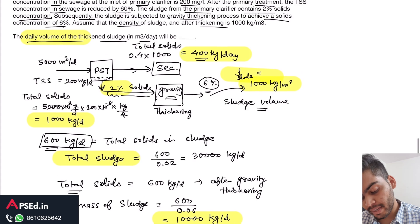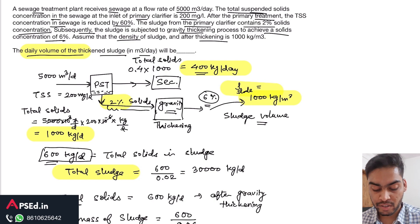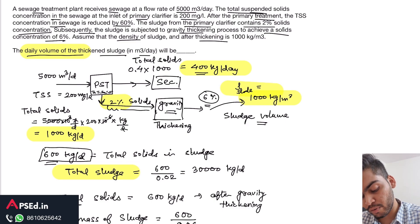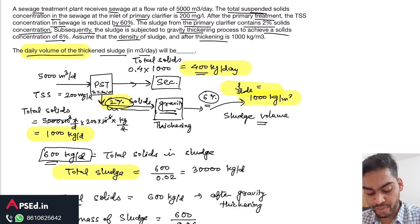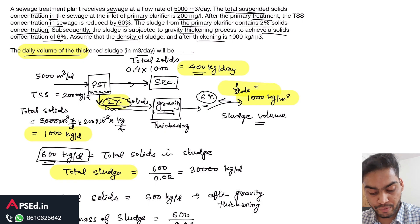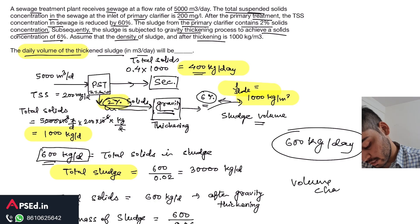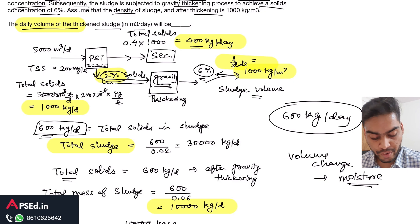In this question it is important to understand what is happening, so drawing a line diagram is key. We have the primary sedimentation tank where solids are removed as sludge at 2% solids concentration. The sludge then undergoes gravity thickening, raising the solid concentration to 6%. The solid mass of 600 kg/day does not change — only the moisture content changes. Using this basic understanding, the remaining values are straightforward to compute.